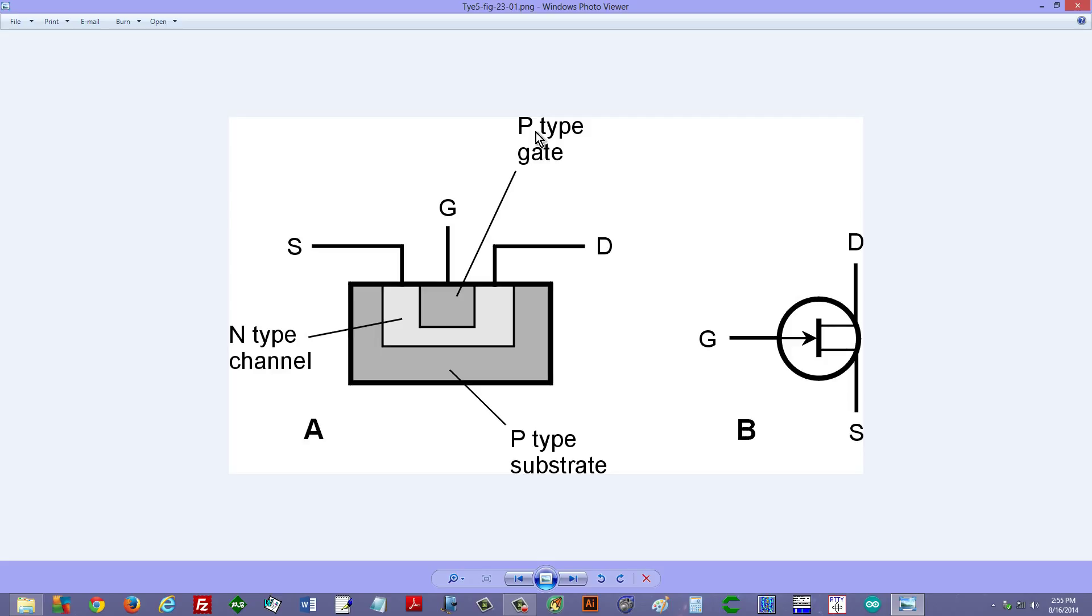You have N type material, you have P type material, you have a source and a drain, and current flows, electrons flow from the source to the drain in this type of device, which is known as an N channel field effect transistor because the channel where the current flows, the electrons flow, is of N type material.